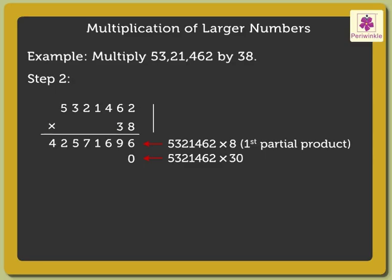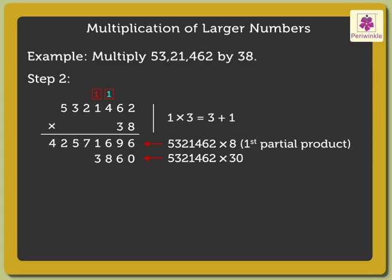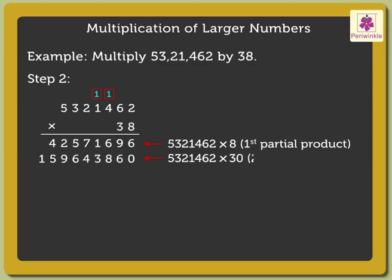Next, 2 into 3 is equal to 6. 6 into 3 is equal to 18. Then, 4 into 3 is equal to 12, plus the carried over 1 is equal to 13. Then, 1 into 3 is equal to 3, plus the carried over 1 is equal to 4. Then, 2 into 3 is equal to 6. Then, 3 into 3 is equal to 9. Then, 5 into 3 is equal to 15. So, we get 15,96,43,860 as the second partial product.